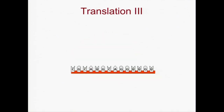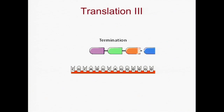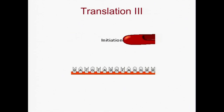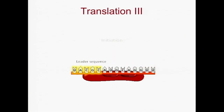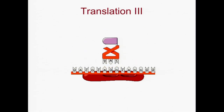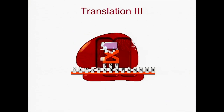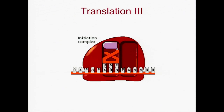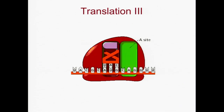Protein synthesis occurs on ribosomes composed of a small subunit and a large subunit, made of ribosomal RNA and several proteins. Translation of mRNA into protein occurs in three stages: initiation, elongation, and termination. The initiation complex begins when the small ribosomal subunit recognizes and binds to a sequence in the leader sequence on the mRNA. The first tRNA bearing an amino acid matches its anticodon with the start codon AUG. The large subunit then joins to complete the initiation complex, with the first tRNA fitting into the P site and the A site empty.